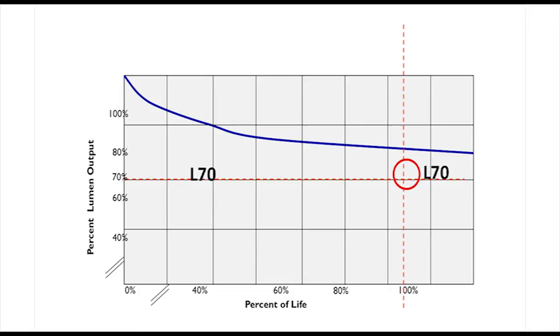For an LED, we use a metric called LM80. LM80 is basically the test procedure to figure out how long an LED will take to reach L70. Recently, TM21 was added — a specific mathematical formula to help us discern when that LED reaches average rated life.